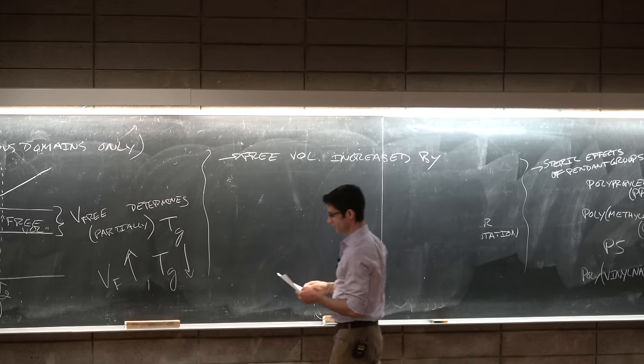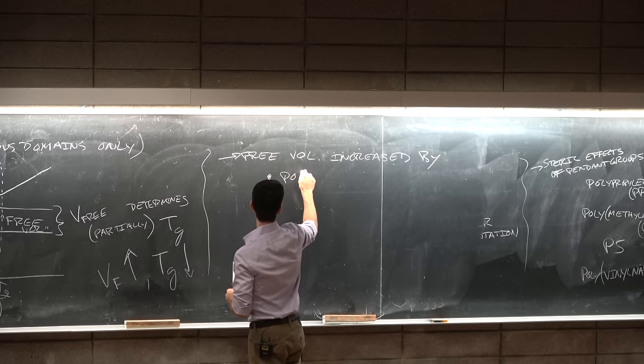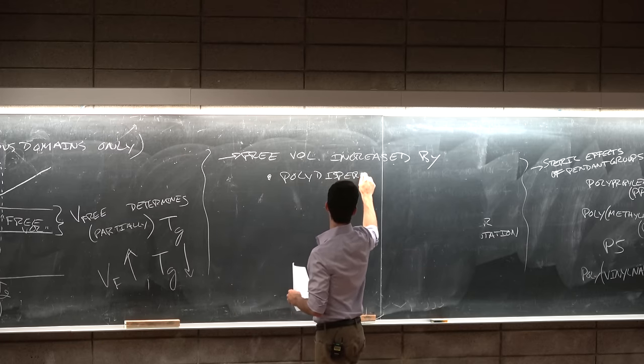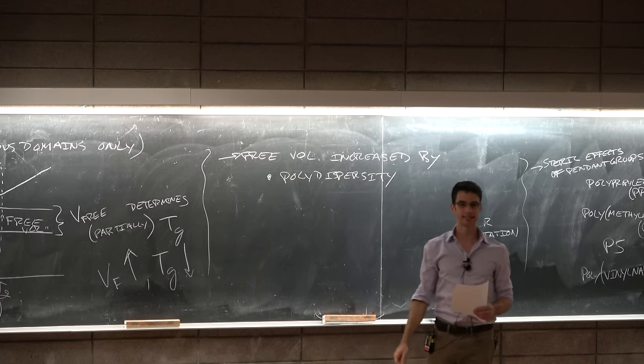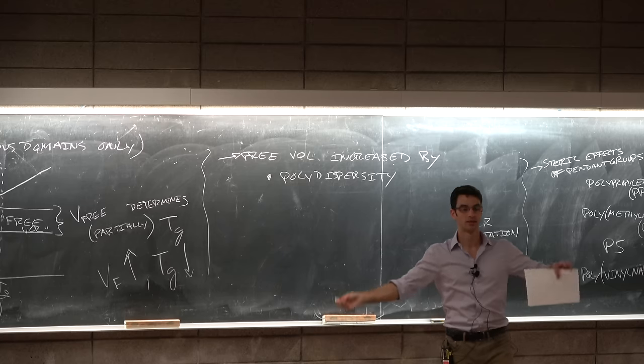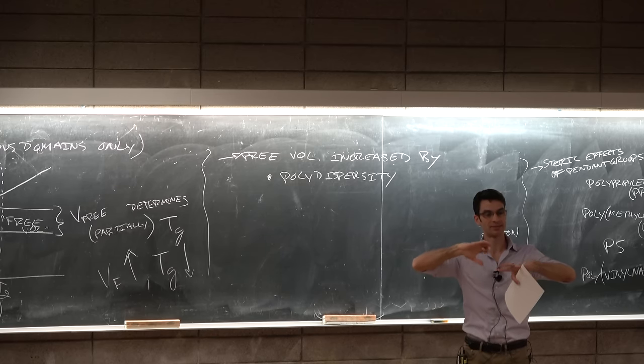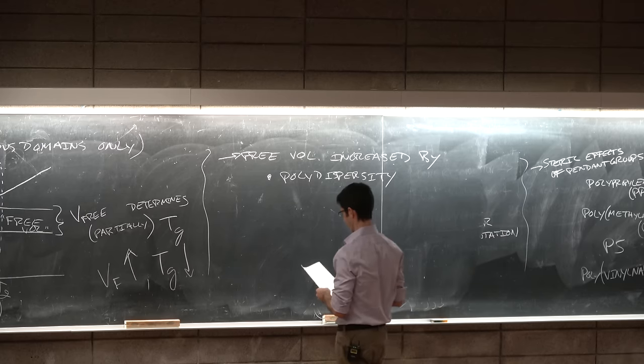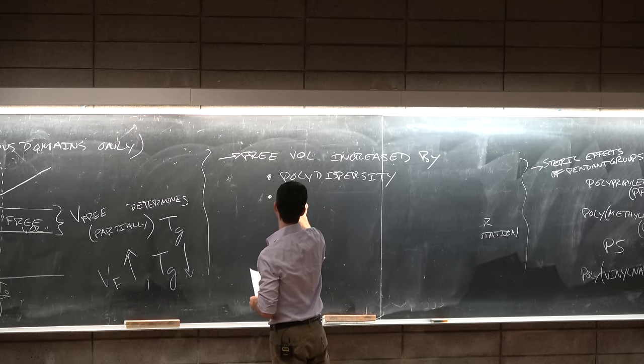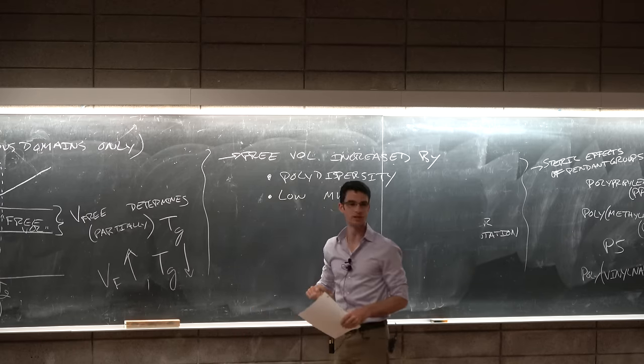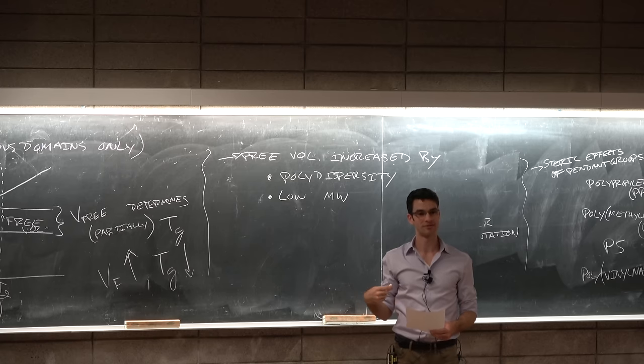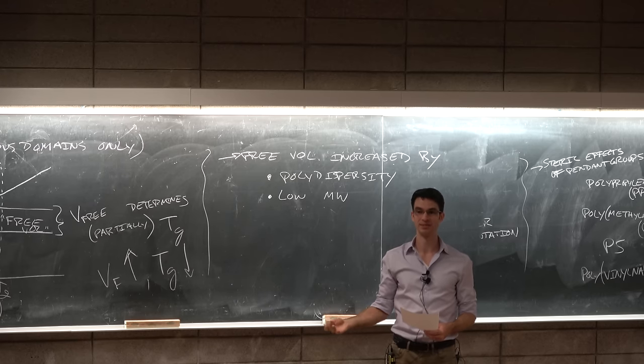So the free volume determines, to a large extent, partially the TG. As the free volume goes up, the TG goes down. Now how do we control the free volume? The free volume can be increased by polydispersity. So the chain ends, polymers can't pack efficiently around chain ends.